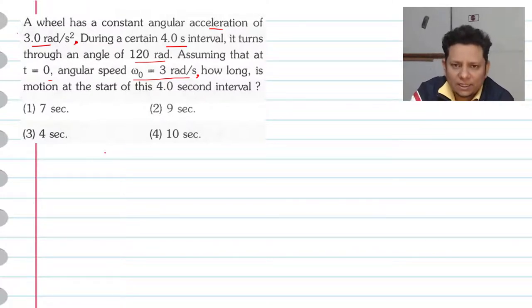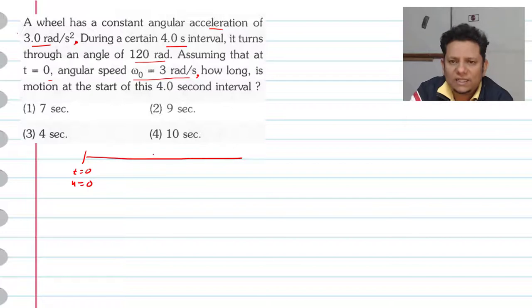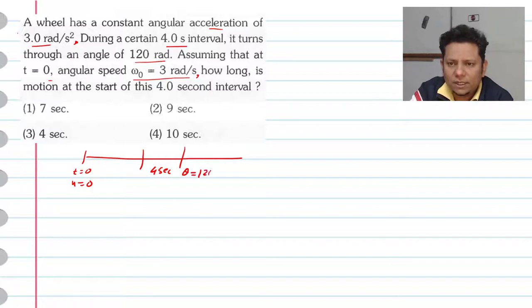Sawal yeh puchha ja raha hai — isko agar hum linear mein convert karein, toh ek particle hai jab t is equal to 0, let's say u equal to 0, yahan se chalu hua hai. Aur kisi ek certain time pe, usne 4 second mein theta jo cover kiya hai, ya aapka displacement jo cover kiya hai, woh toh hai 120 radian.